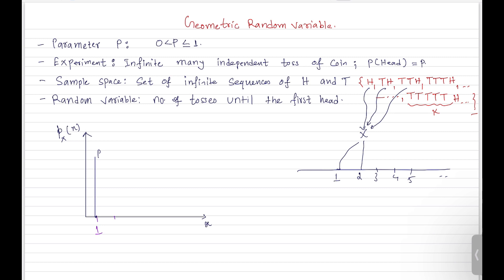Or maybe we have to do two trials — we don't get success on the first trial and we get success on the second trial, so the random variable takes value 2. What is the probability that X equals 2? On the first trial we get tail and on the second trial we get head. So the probability is (1-P)·P. We multiply these probabilities because we assumed all trials are independent.